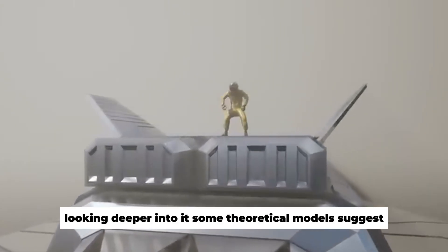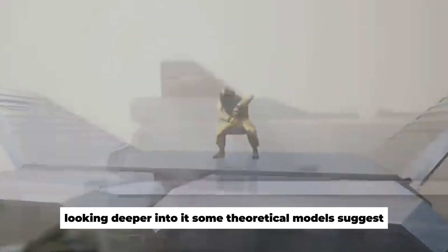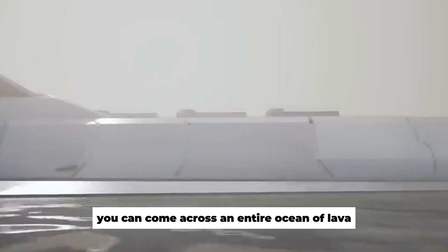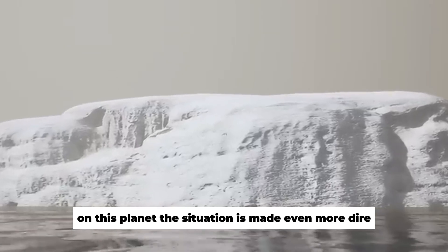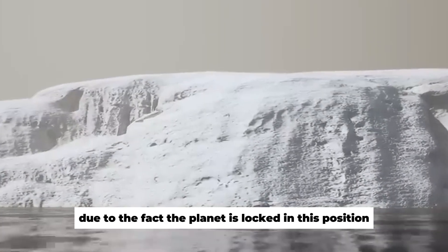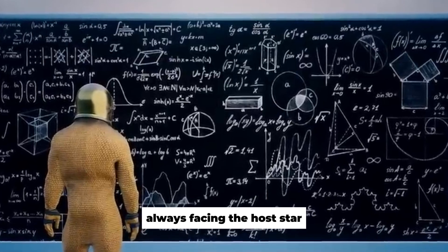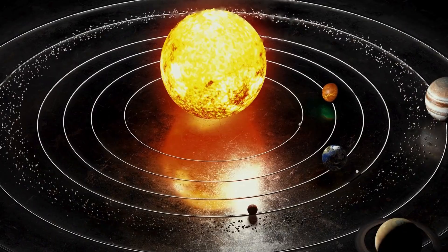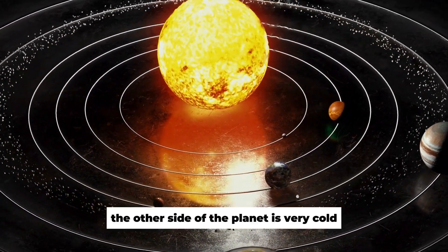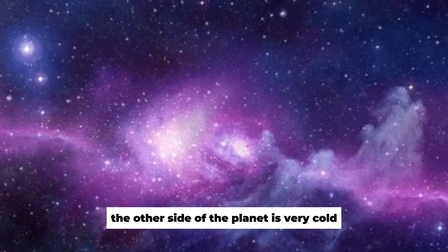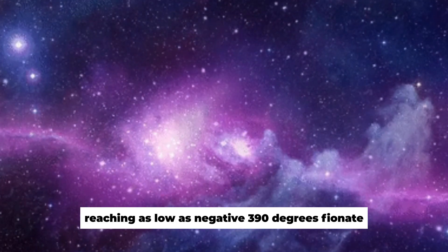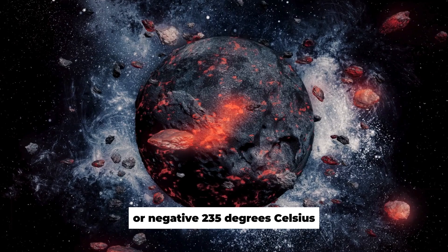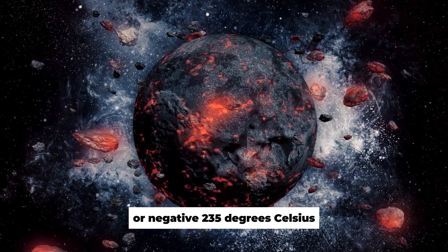Looking deeper into it, some theoretical models suggest you can come across an entire ocean of lava on this planet. The situation is made even more dire due to the fact the planet is locked in this position, with the fire and sulfur side always facing the host star. At the same time, the other side of the planet is very cold, with surface temperatures reaching as low as negative 390 degrees Fahrenheit or negative 235 degrees Celsius.